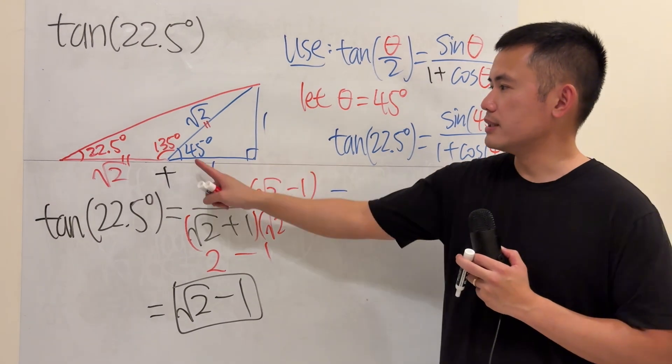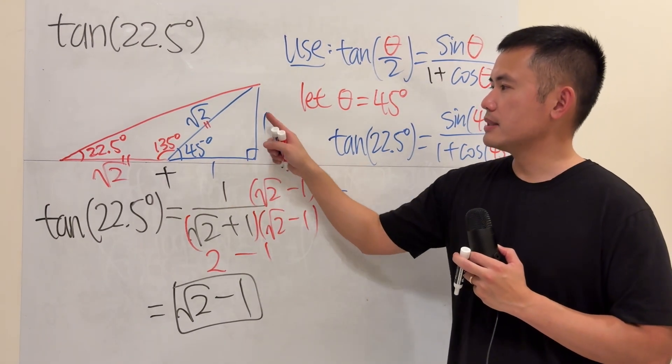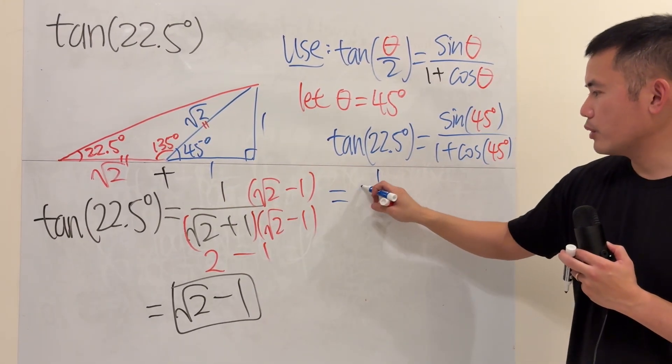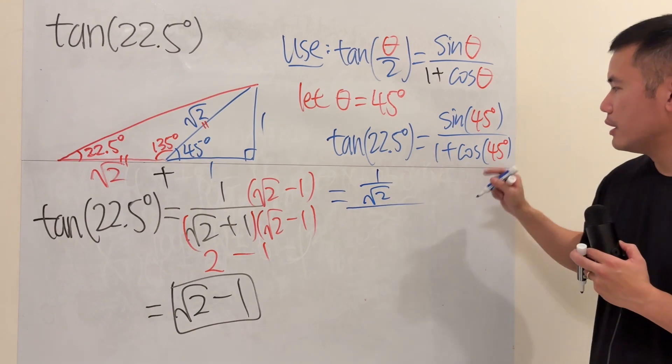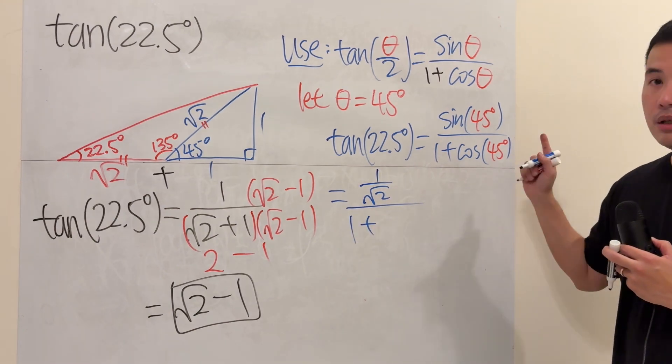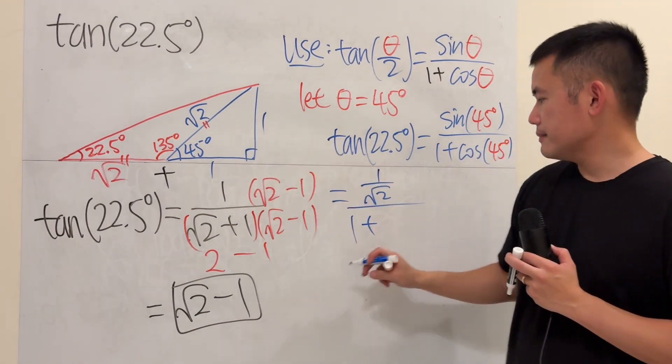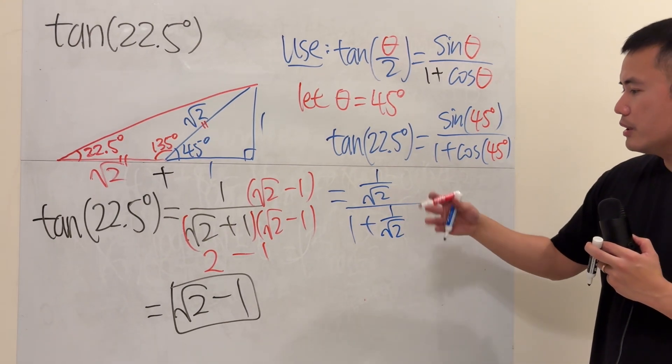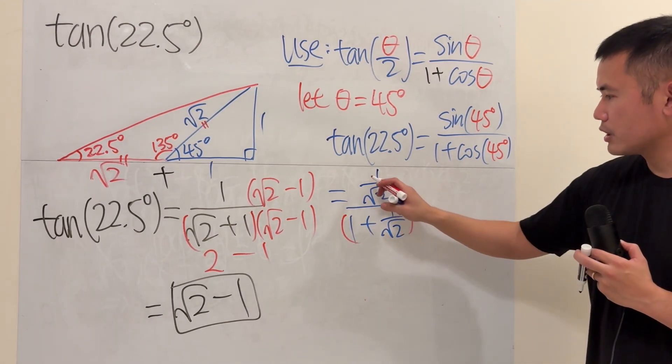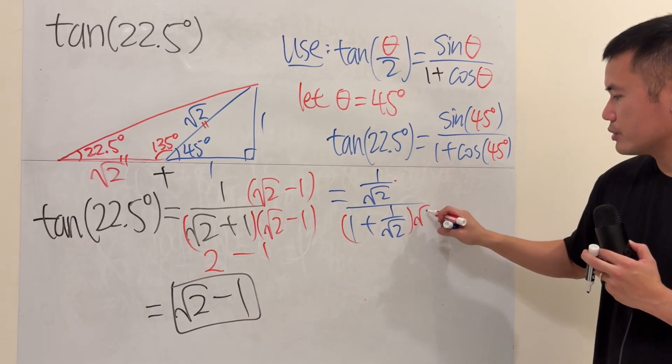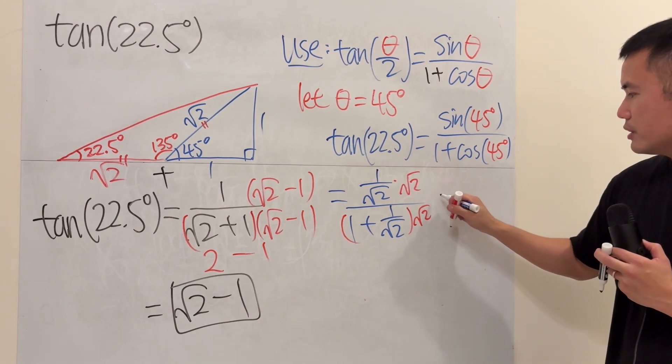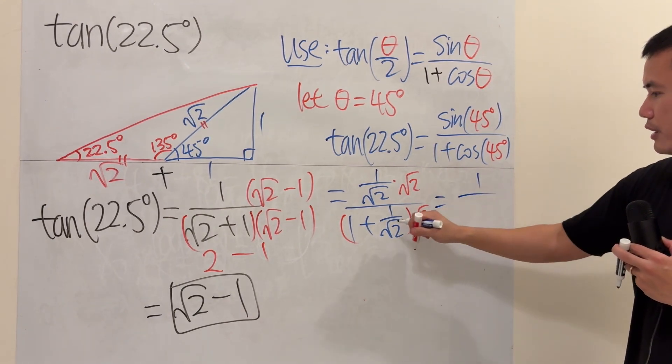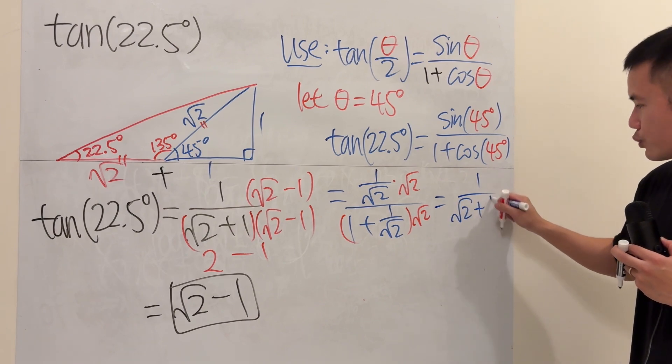Now, sine of 45 degrees, you can just look at this special right triangle. It's the opposite over hypotenuse, which is 1 over square root of 2. On the bottom, 1 plus cosine is adjacent over that. It's also the same as the top. You can simplify this a little bit. Multiply the top and bottom by square root of 2 to get rid of the complex fraction. So 1 over square root of 2 plus 1.